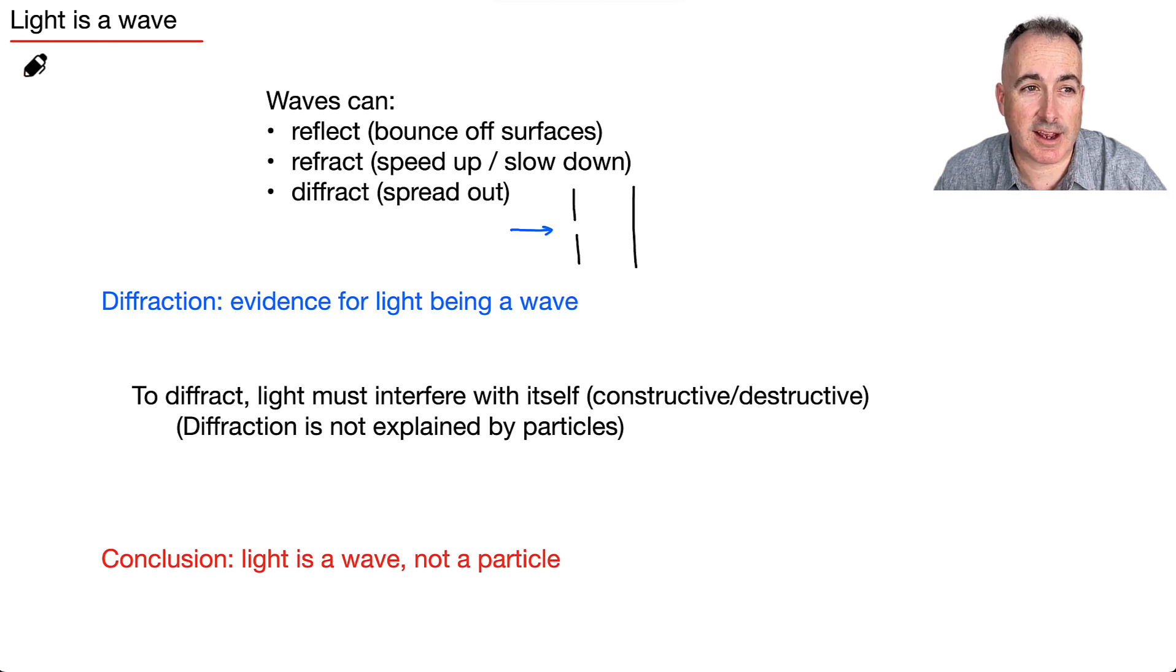But what if we do consider light as a wave? You know, light sort of something waving like this right here, some sort of wavy thing. Well, let's look at this. What can waves do? They can also reflect. They can bounce off surfaces. They can refract. They can speed up or slow down. But what's important is this: Waves can also diffract. And so does light, by the way.